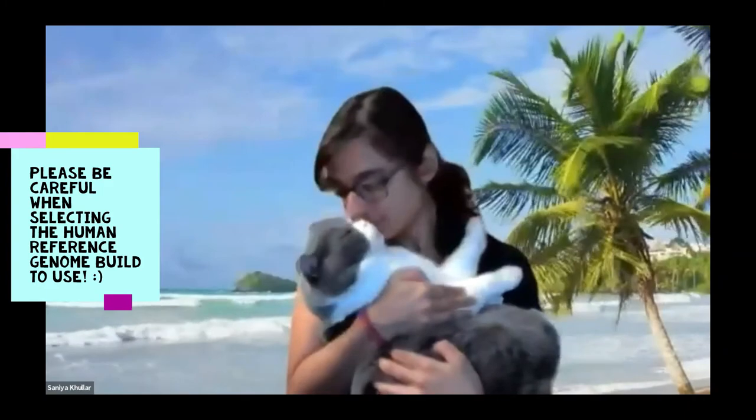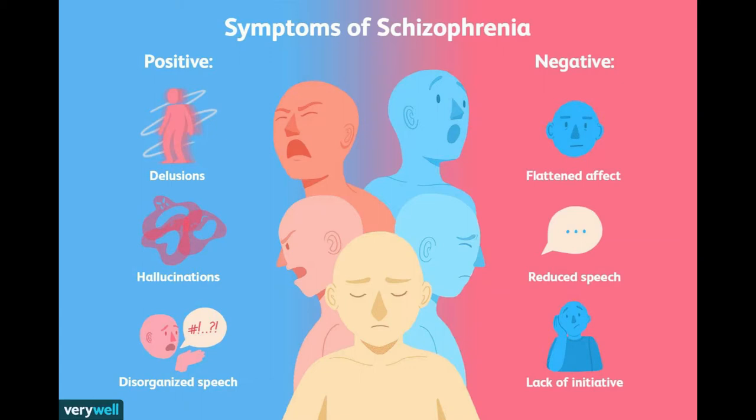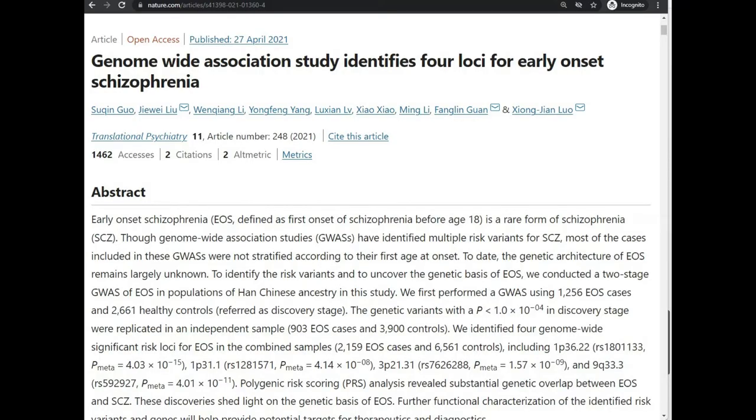We're going to look at the schizophrenia 2021 genome-wide association study. The dataset has base pair position information and chromosome number, but for this example we're going to pretend that it does not. I'm going to show you how we can get this information for any genome build we're interested in. So if you have a list of SNPs, how do you find that information?